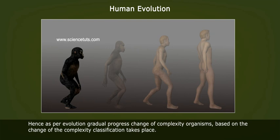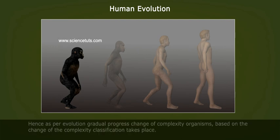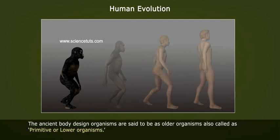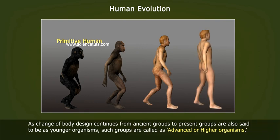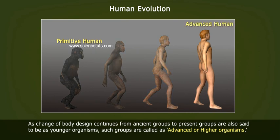As per evolution, classification takes place based on the change of complexity of organisms. The ancient body design organisms are said to be older organisms, also called primitive or lower organisms. As body design changes from ancient groups to present groups, these are called younger organisms, also referred to as advanced or higher organisms.